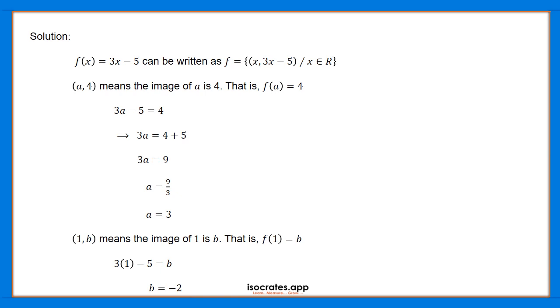So 3 minus 5 equals b. Therefore, the value of a is a equals 3, and the value of b is b equals minus 2.